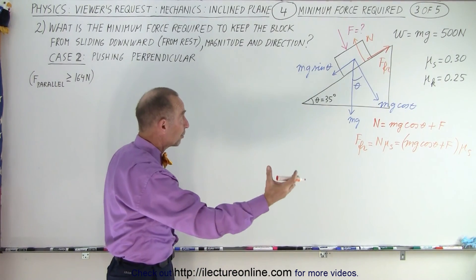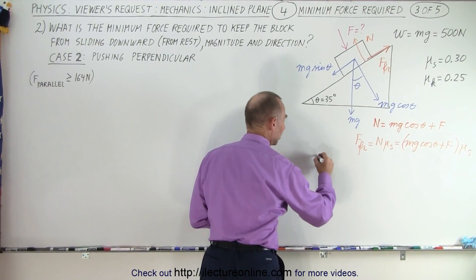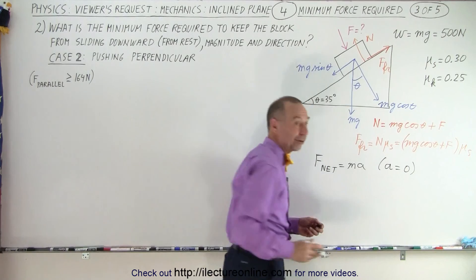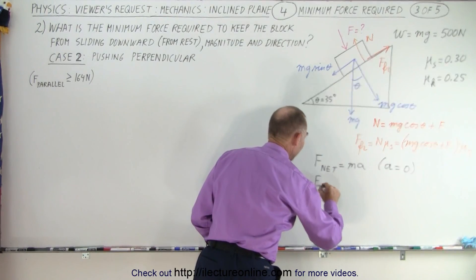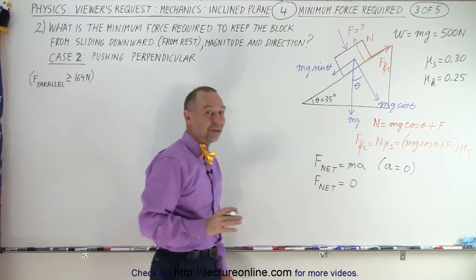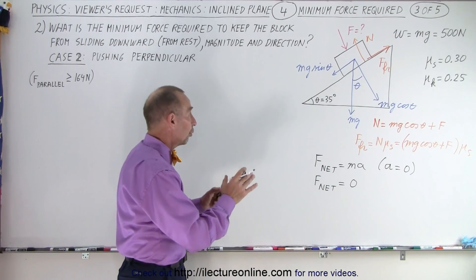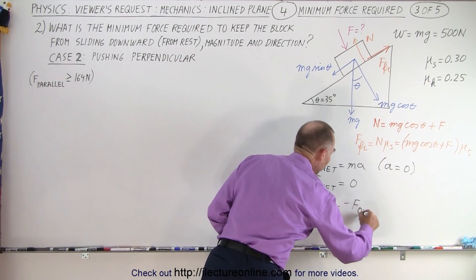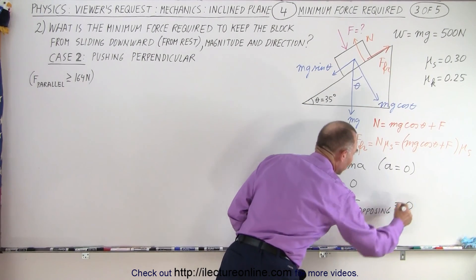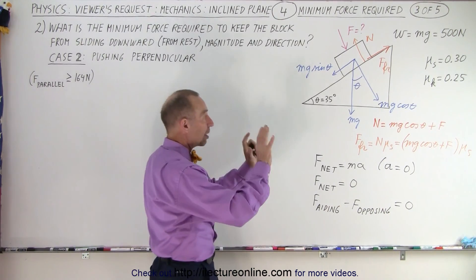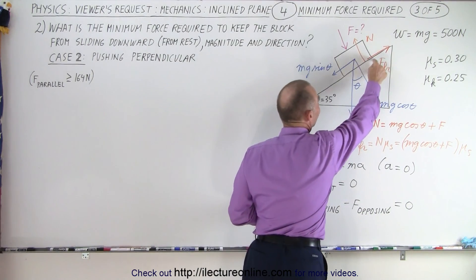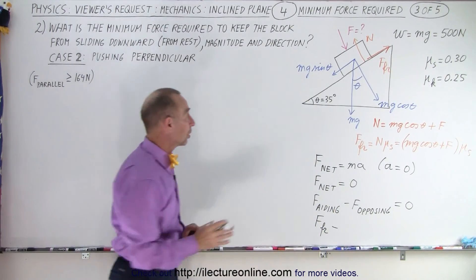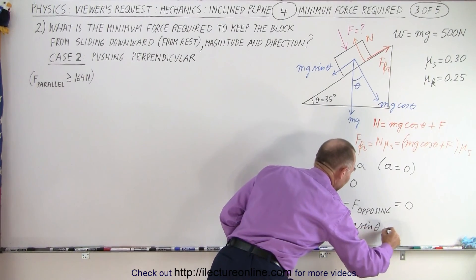It's the friction force that's now going to prevent the block from sliding down. Starting with the equation F net equals mass times acceleration, and realizing that acceleration is going to be equal to zero because we're trying to prevent the block from sliding, we end up with F net equal to zero. The net force consists of forces aiding what we're trying to do minus the forces opposing. The aiding force is only the friction force, and the opposing force is mg sine theta, and that equals zero.